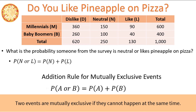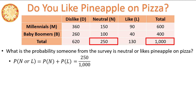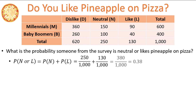The probability of the first event, neutral, is the total number of individuals who answered neutral — 250 — out of the 1,000 individuals surveyed. The probability of the second event, liking pineapple on pizza, is the total number of individuals who like pineapple on pizza — 130 — out of the total of 1,000. Adding these two values together gives us 380 out of 1,000, or 0.38.